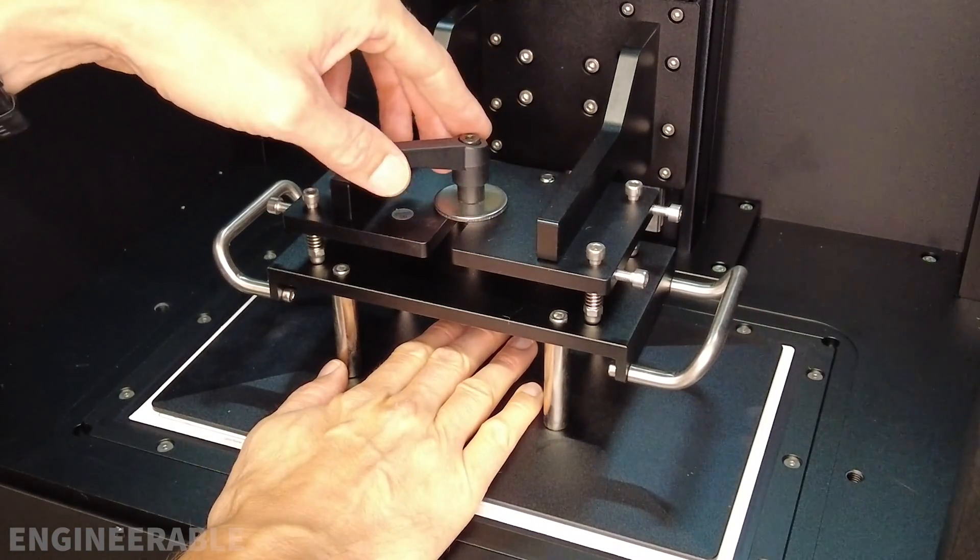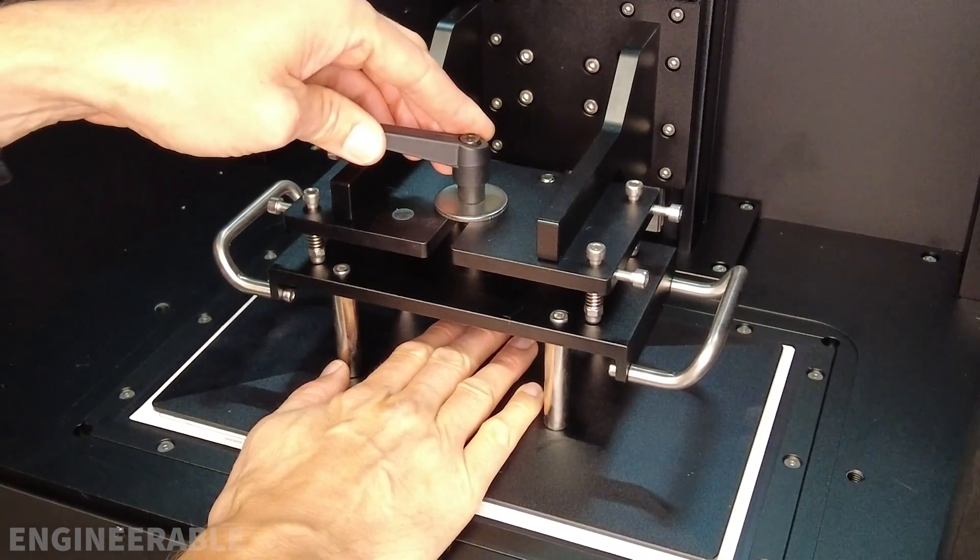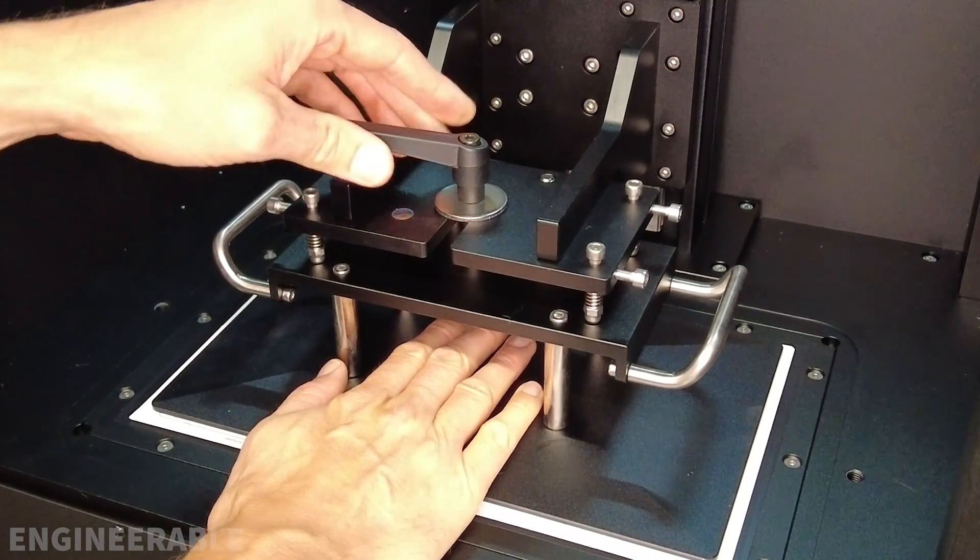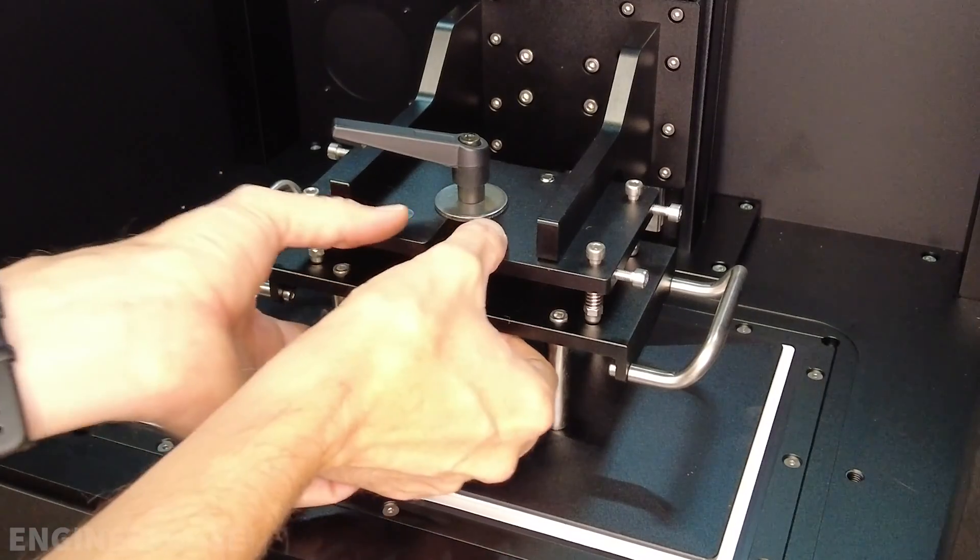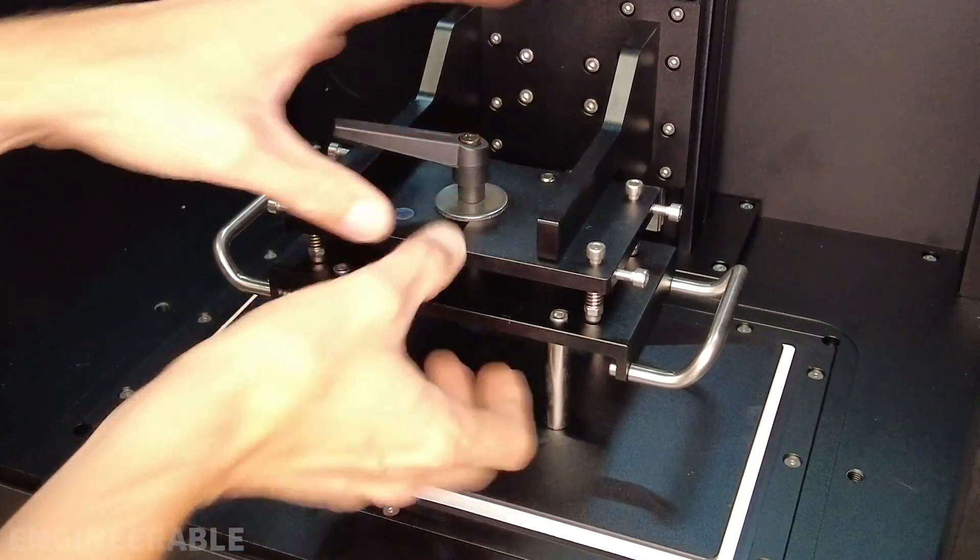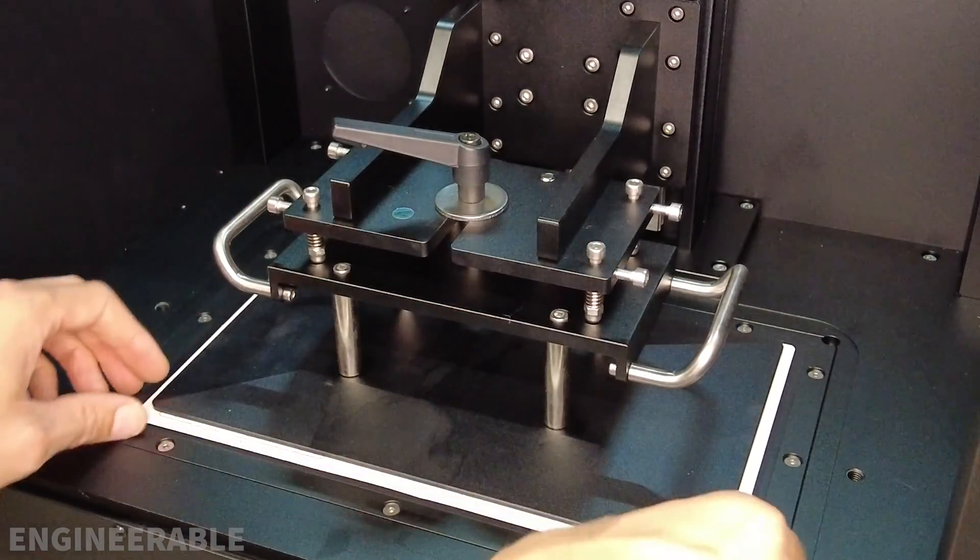Okay, now I'm going to tighten up the release handle. And this release handle, you just want it snug. You don't want it too tight, because if you tighten this up too much, it's going to warp these plates. Basically it wants to suck these plates together. It's going to bend stuff. It's going to throw stuff out of calibration.